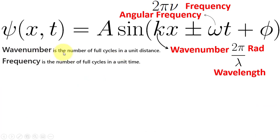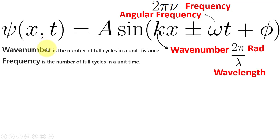The important concept is the wave number. Wave number is defined as the number of cycles in a unit distance. Here, ω is the angular frequency, equal to 2πν, where ν is the time frequency. The frequency ν is called the time frequency, while the wave number is called the spatial frequency.